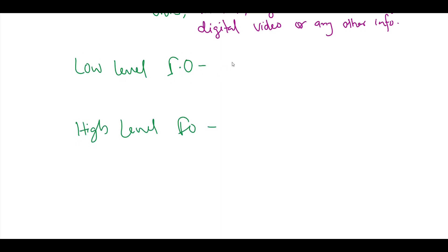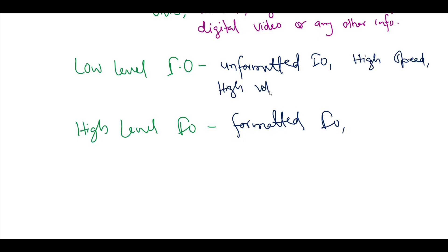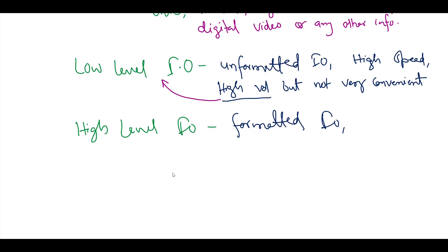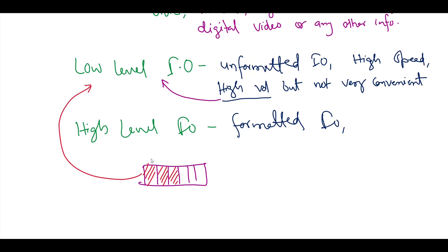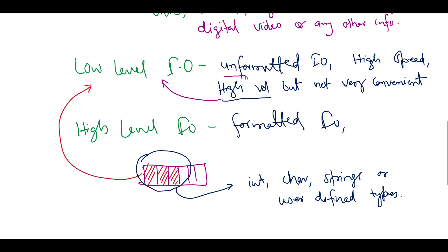In the case of low-level IO, the IO is unformatted, whereas in the case of high-level IO, the IO is formatted. Due to unformatted IO, the transfer is of high speed and high volume but it is not very convenient. Formatted IO is sufficient for most IO other than high-volume file processing. In low-level IO, each individual byte is of interest, while in high-level IO, bytes are grouped together to form meaningful units such as integers, characters, strings, or user-defined data types. One problem with unformatted IO is that it can lead to portability issues across platforms.